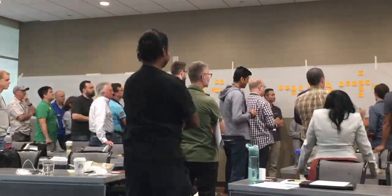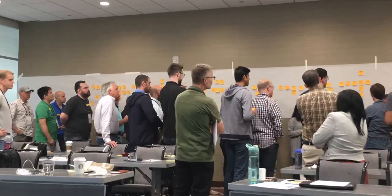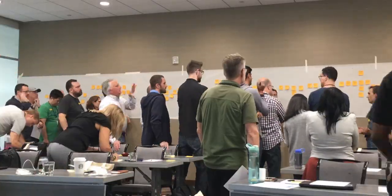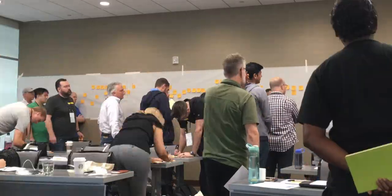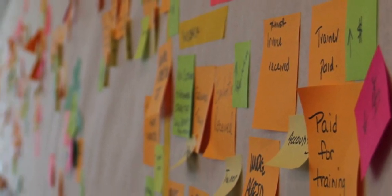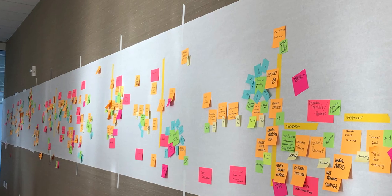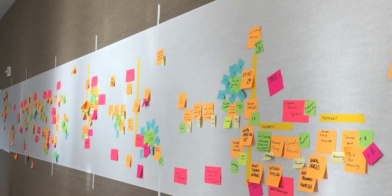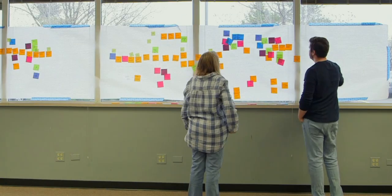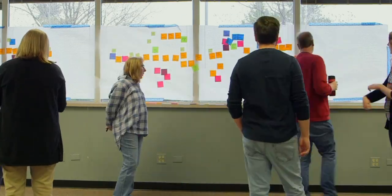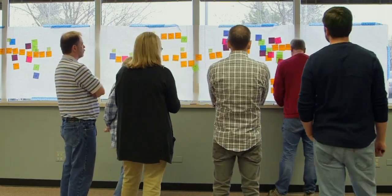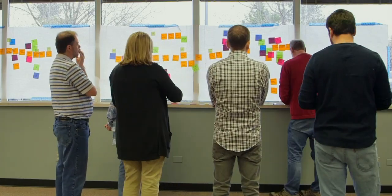Everyone then sequences their events together into a cohesive narrative on the timeline. As the session progresses, more and more information is layered onto the timeline, enriching the model as needed with such things as questions, risks, pain points, actors, business rules, decisions, even external systems and emergent boundaries.